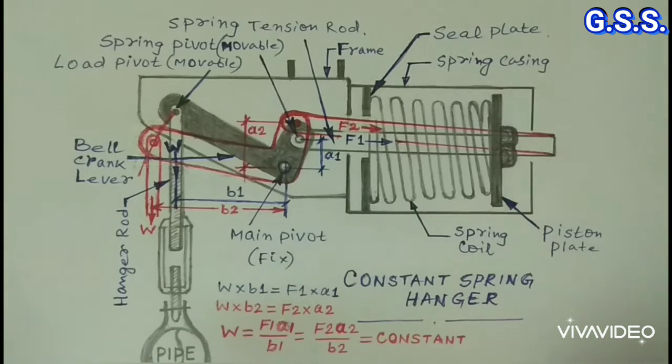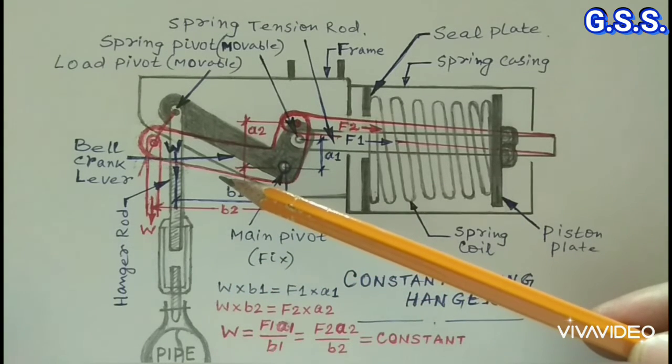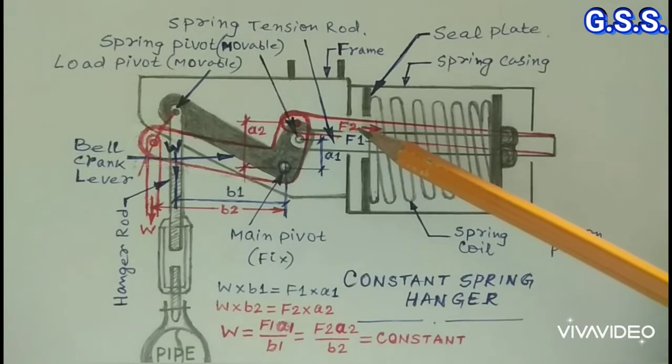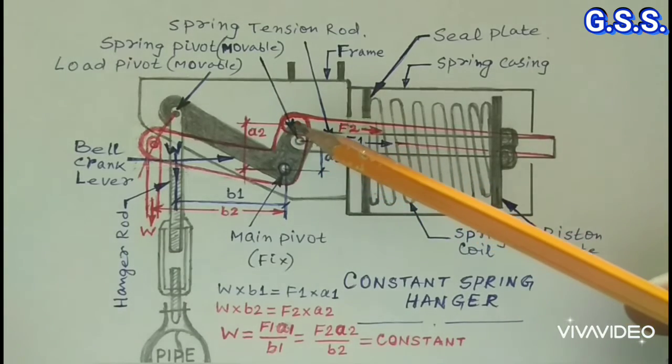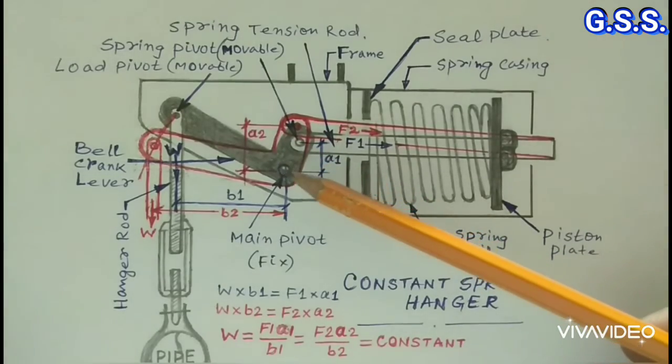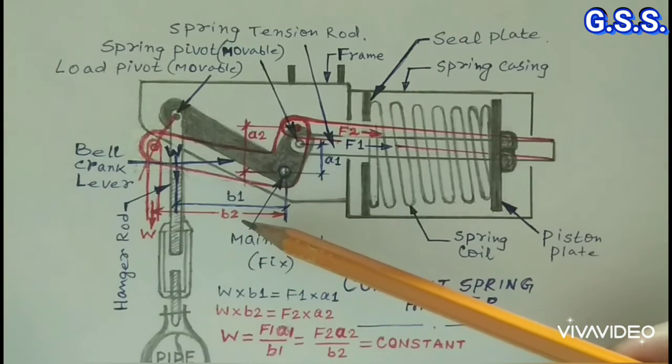After a vertical movement of the pipeline, the red color indicates the changed position of the bell crank lever. In this condition, spring force equals F2, moment distance between spring pivot and main pivot is A2, and moment distance between main pivot and load pivot is V2.